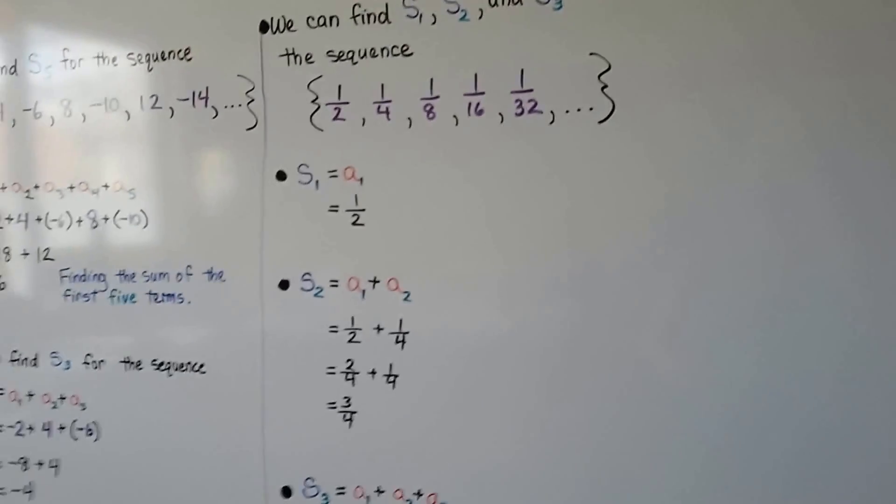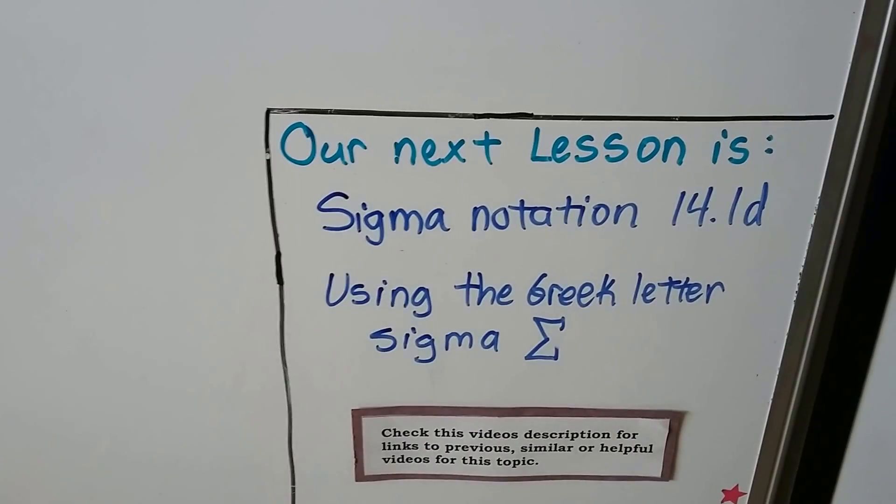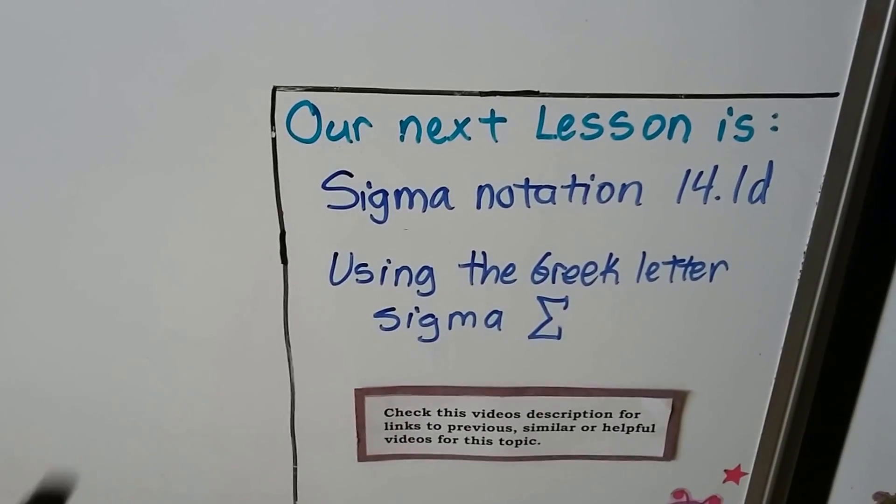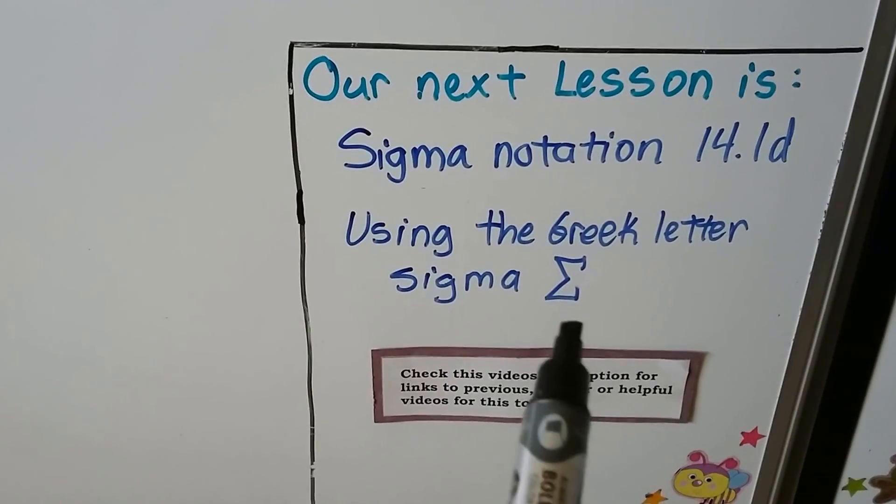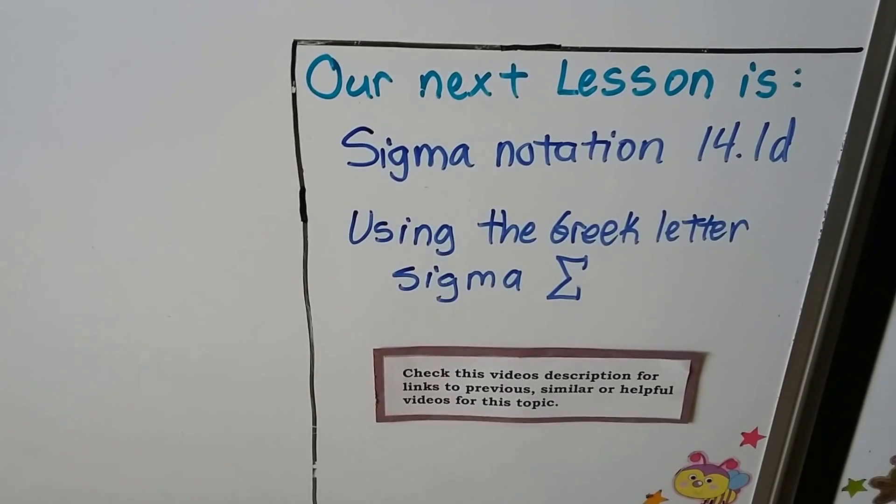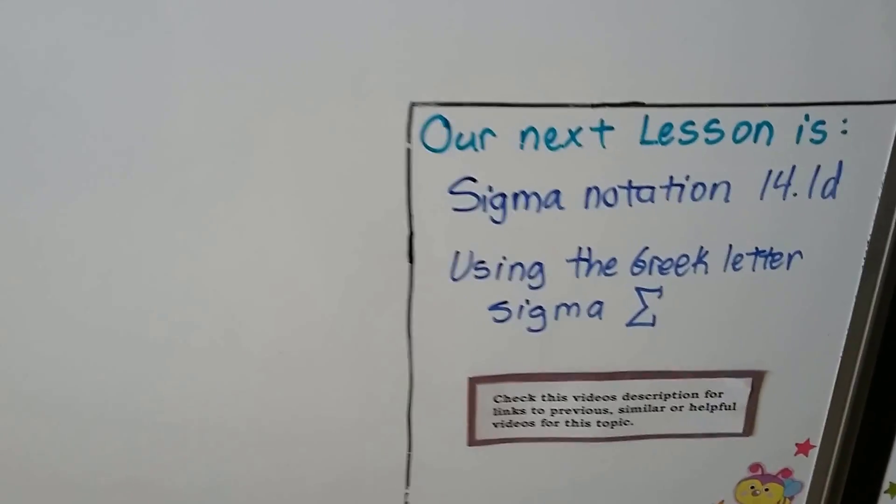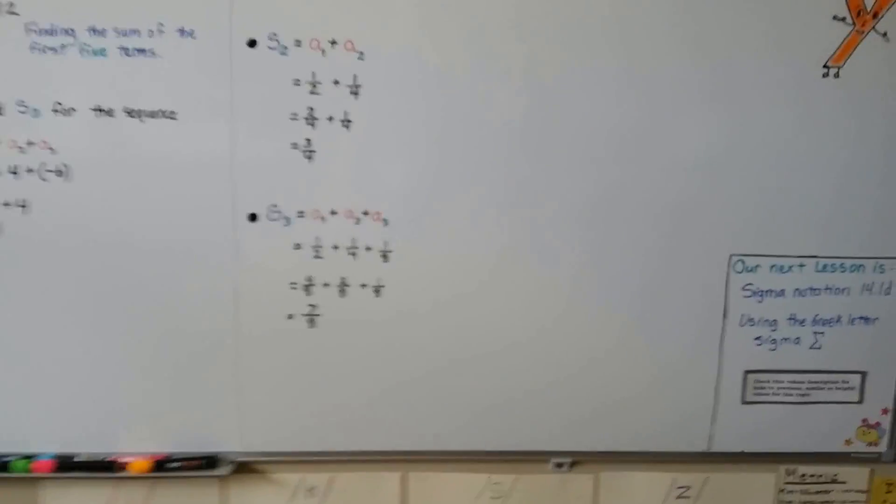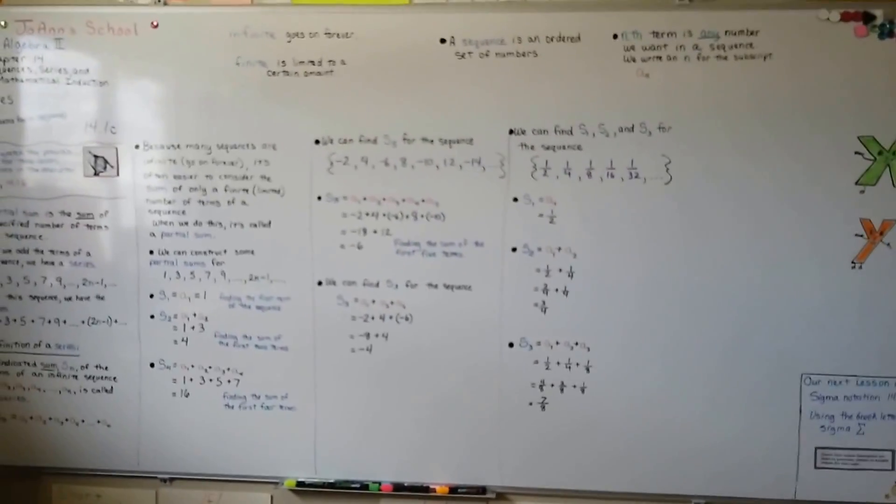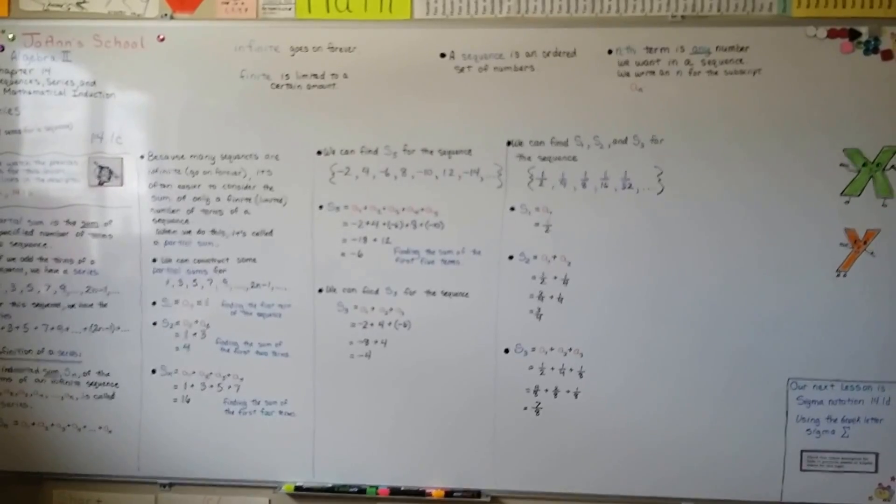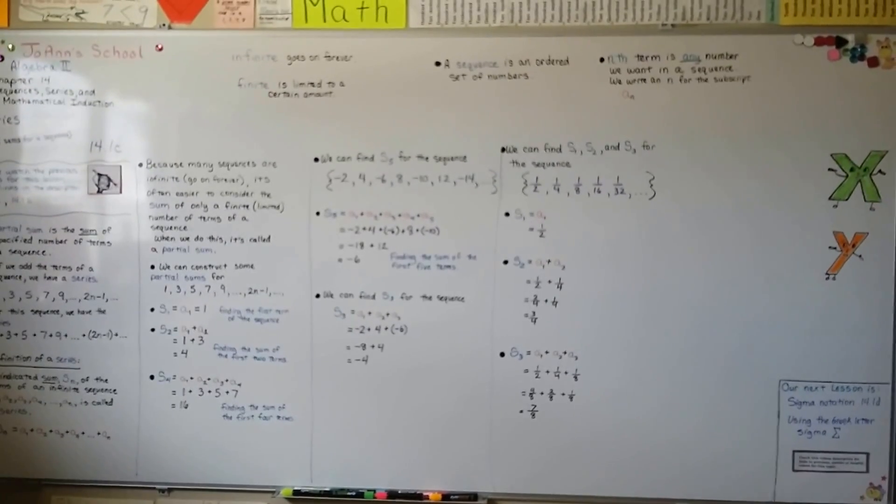Our next lesson is going to continue on for 14.1. We've done A, B, and C. Next one is sigma notation, 14.1D. We're going to talk about using the Greek letter sigma. We use it to simplify notation when a series has a formula for the general term. I hope this was helpful. If it does, hit the like button, and I'll see you next time when we'll talk about that Greek letter sigma.